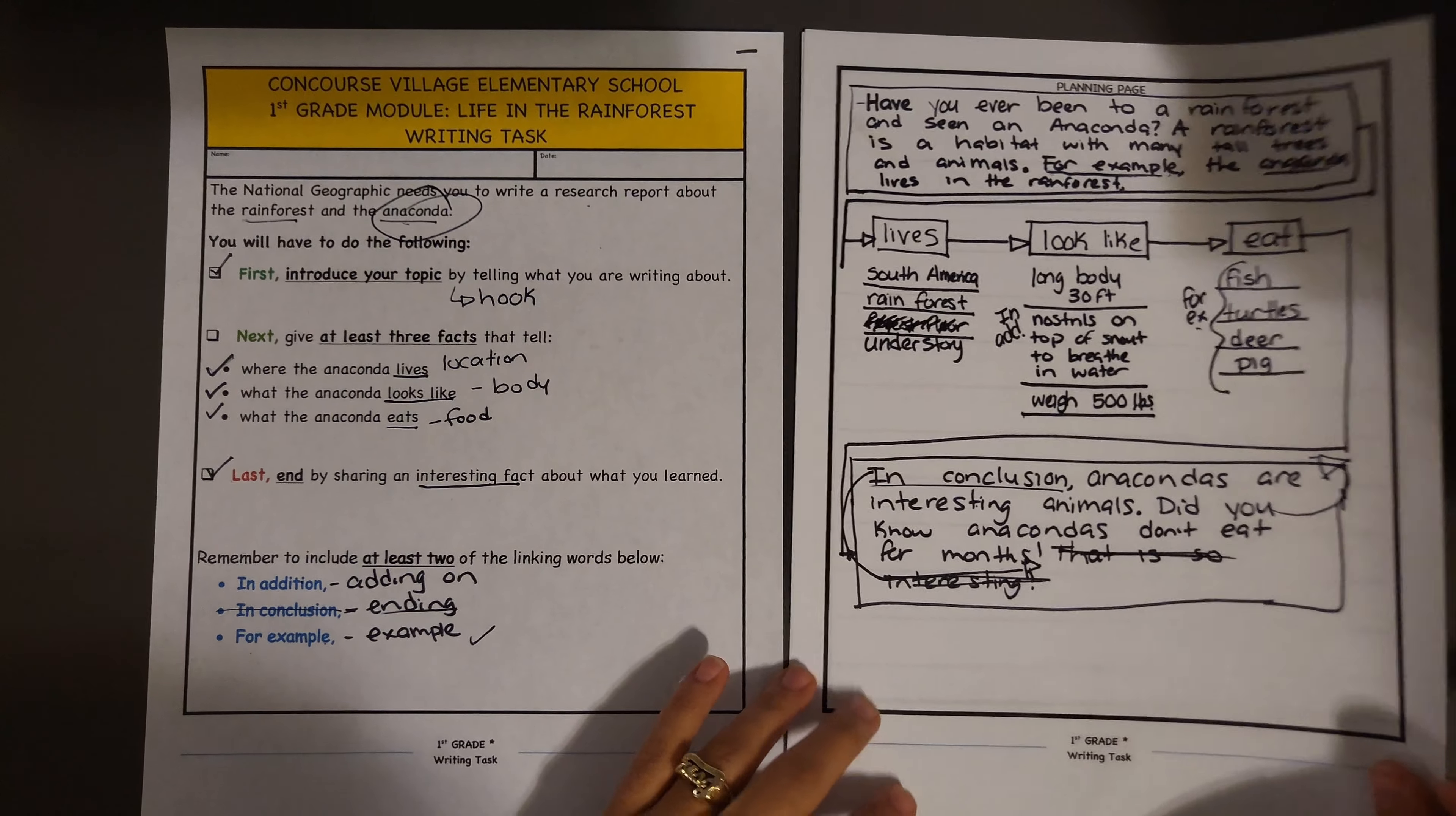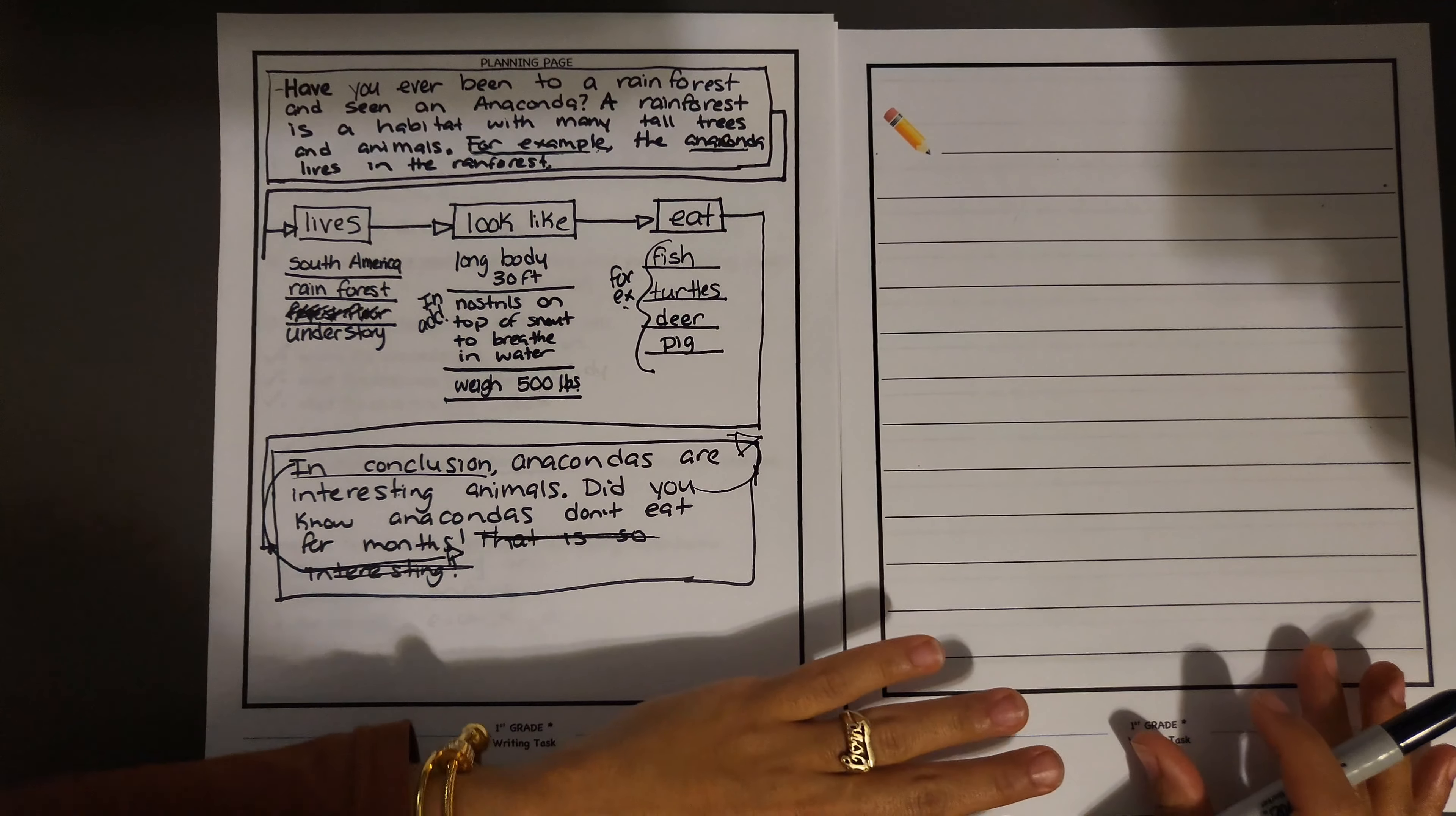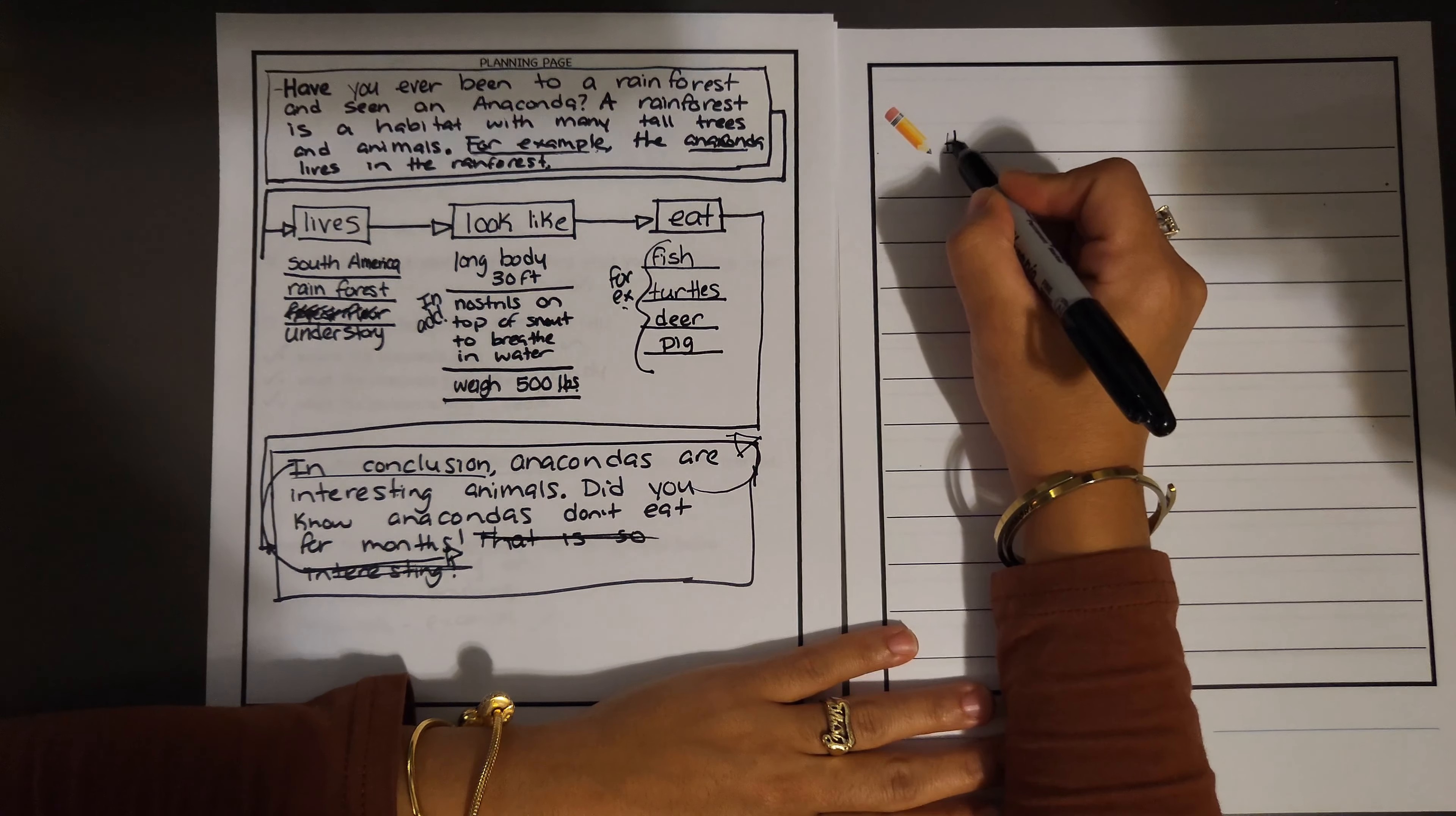I want to make sure that I'm using my best handwriting and that I am not erasing because I want to make it nice and neat. My introduction—all I'm going to do is copy it exactly as I wrote it there because it is complete. I'm going to start on the first line. I do not want to write too big.